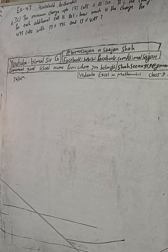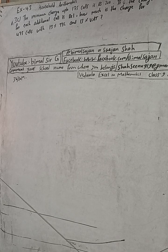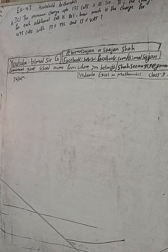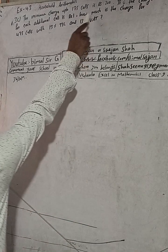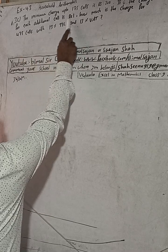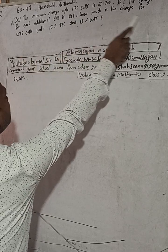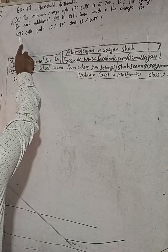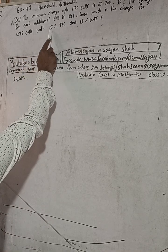Hi class 9 and 10 students, welcome back to Bimal Sir's YouTube channel. This is question number 3C, exercise 4.3, household arithmetics, Vedanta Excel in Mathematics class 9. The question is: the minimum charge up to 175 calls is Rs.200. If the charge for each additional call is Re.1, how much is the charge for 475 calls with 13% TSE and 13% VAT?